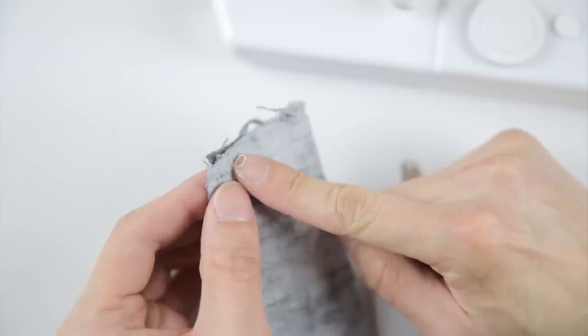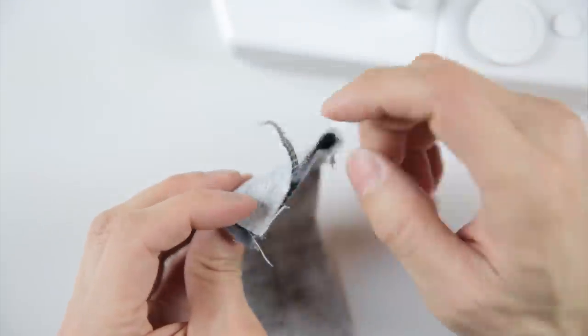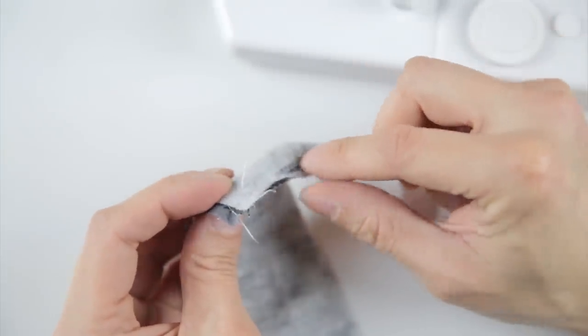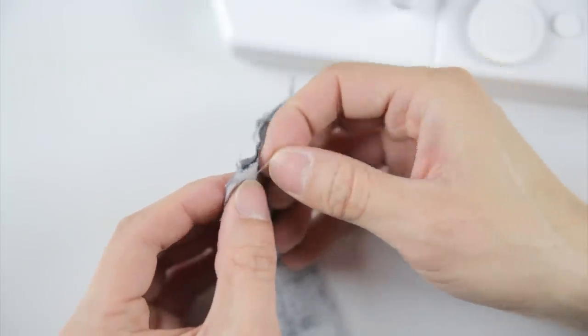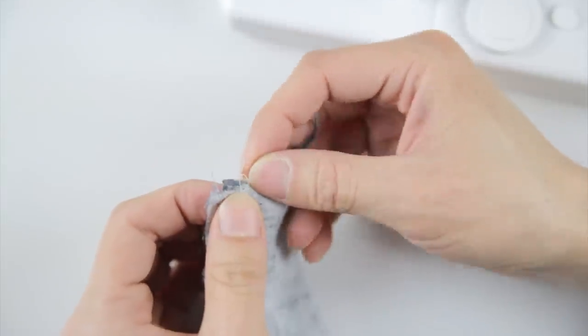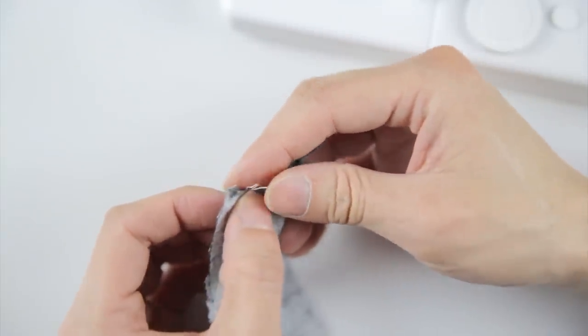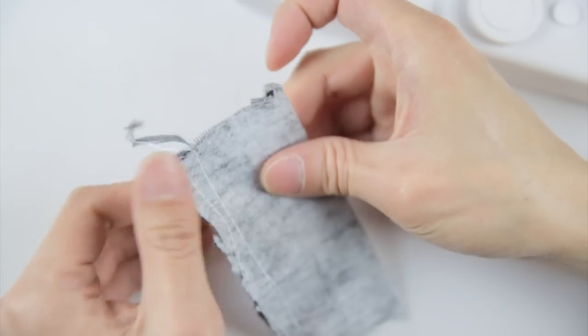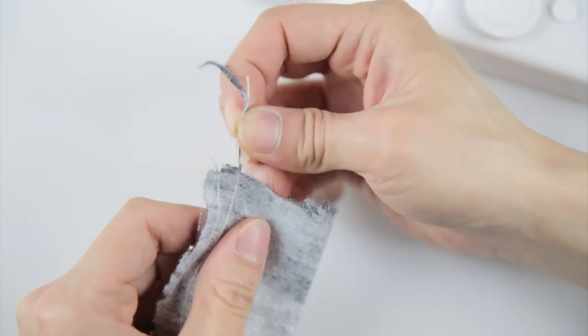So you'll notice there's this little loop left over here. If you just pull on this string, it's just all going to unravel, which is not what you want. You want it to be locked. So what we'll do is you just pull this little hoop out a little bit longer. And then you feed this piece of string through that little loop. And then you pull it tight. And just like that. It's all taut and it's not going to unravel that way.